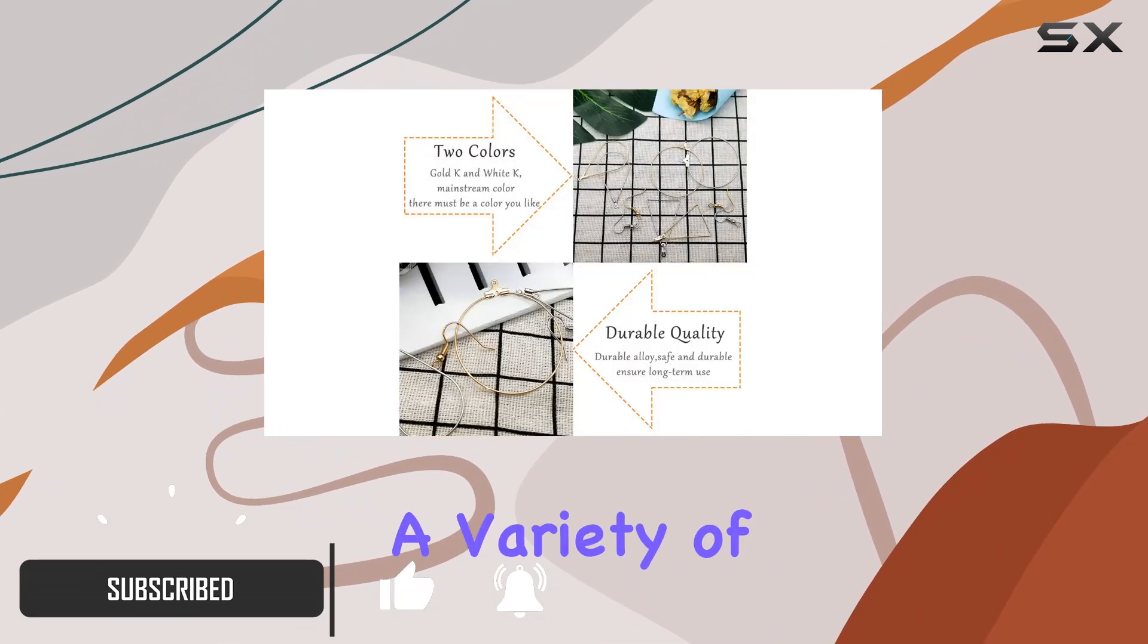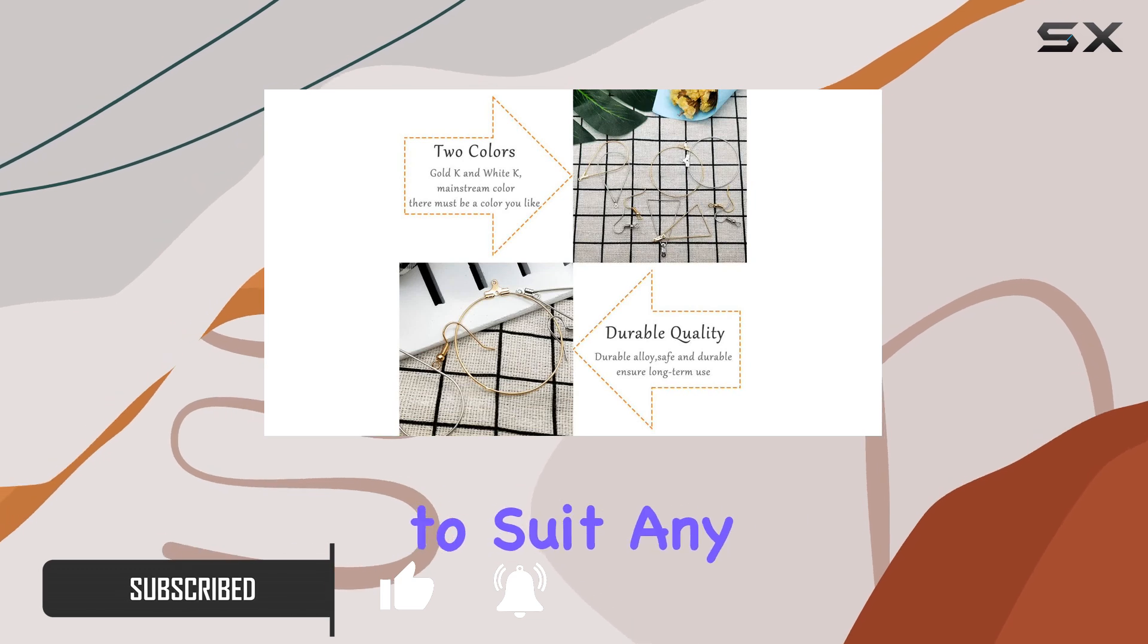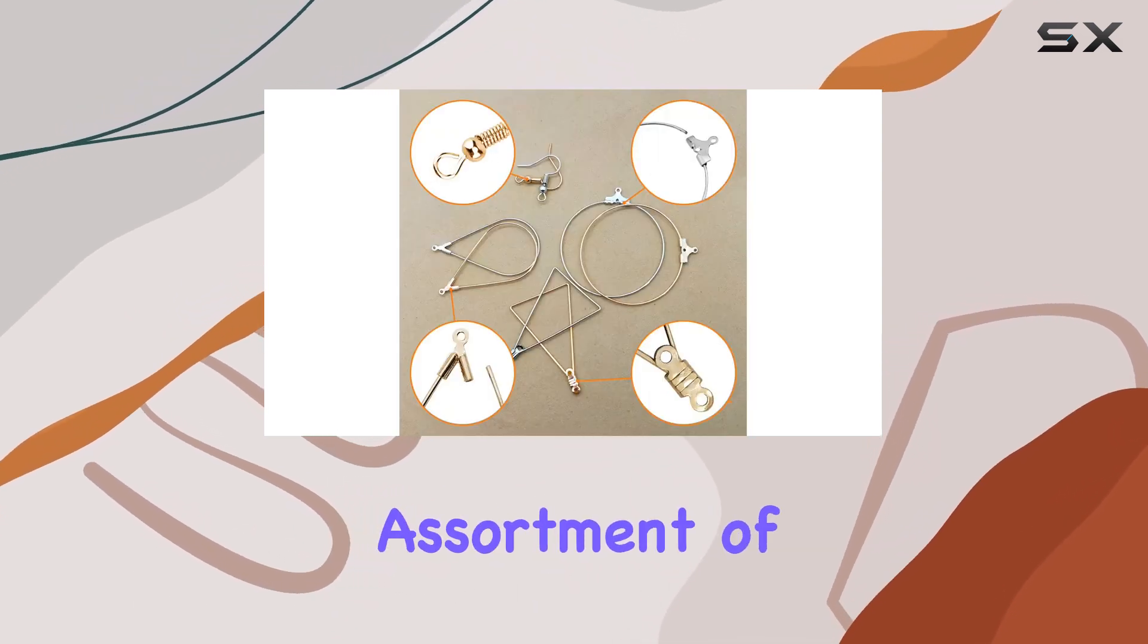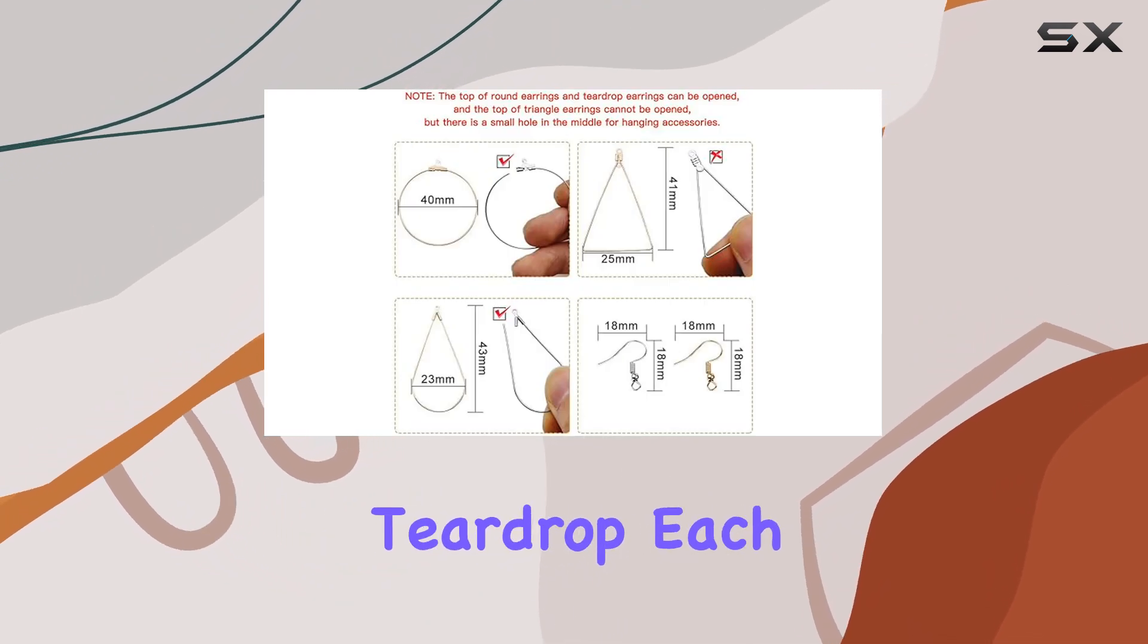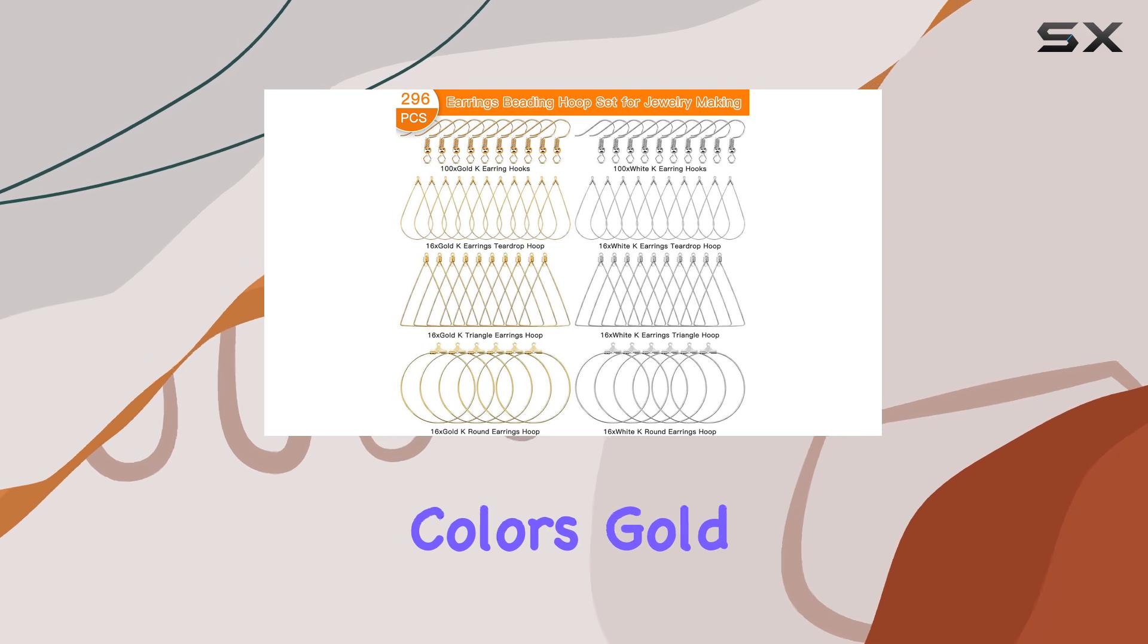In the box, you'll find an impressive assortment of earring hoops in three distinct shapes: round, triangle, and teardrop. Each shape comes in two elegant colors, gold tone and white tone, with 32 pieces of each shape. The possibilities for design variations are nearly endless.